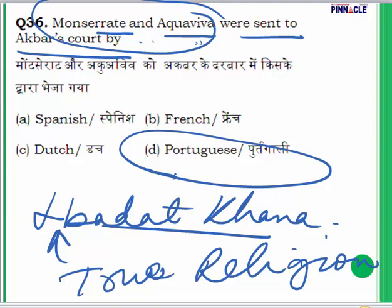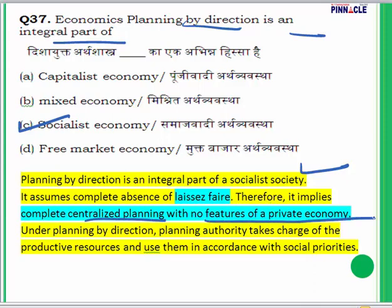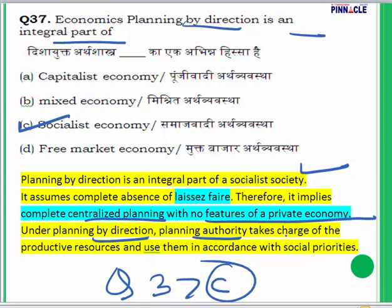Question 37: Economic planning by direction is an integral part of what? It is an integral part of a socialist economy. Planning by direction assumes complete absence of laissez-faire and applies complete centralized planning with no features of a private economy. When there is planning by direction, the planning authority takes charge of productive resources and uses them in accordance with social priorities. The answer to question 37 is C.